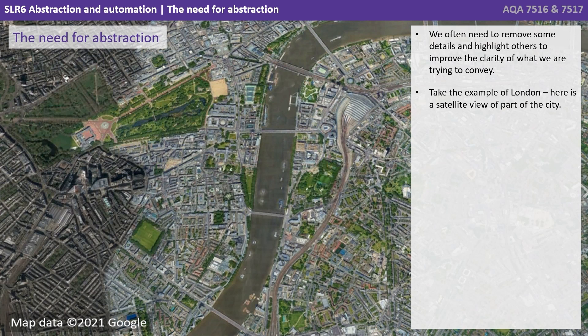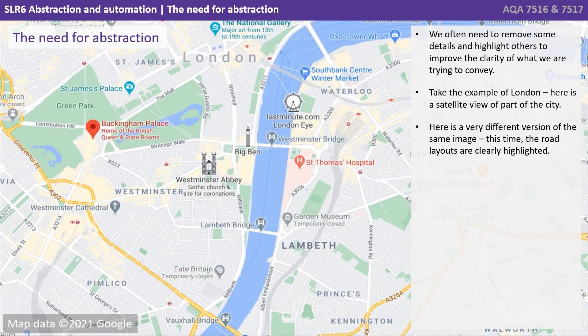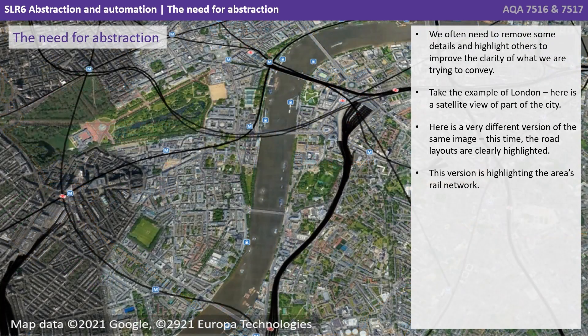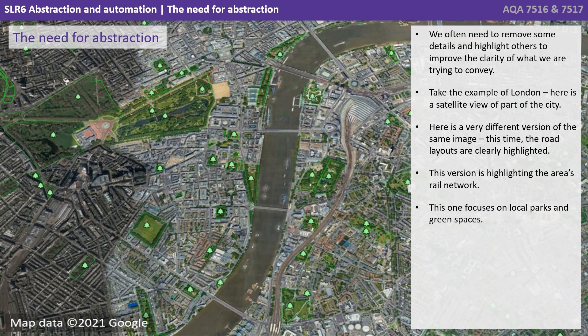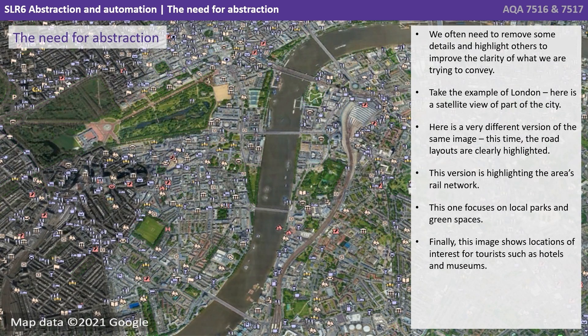Take the example of London. Here's a satellite view of part of the city. Here is a very different version of the same image — this time the road layouts are clearly highlighted. This version is highlighting the area's rail network. This one focuses on local parks and green spaces. Finally, this image shows locations of interest for tourists, such as hotels and museums.